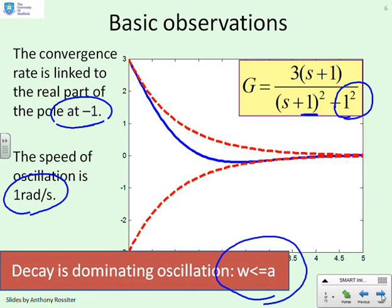So here we have the conclusion. The decay is dominating the oscillation. And one way we can anticipate that is by looking at the relative magnitude of the imaginary part here, omega, and the real part a. Here, omega equals a. And in general, if omega is less than or equal to a, you probably won't see much oscillation.